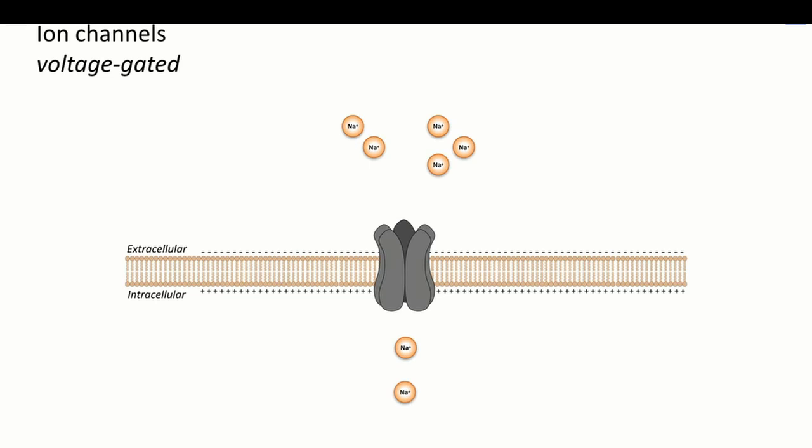They are found in particular abundance in nerves and muscles, where voltage-gated sodium and potassium channels contribute to the onward transmission of waves of depolarization, and voltage-gated calcium channels contribute to neurotransmitter release in presynaptic nerve endings.